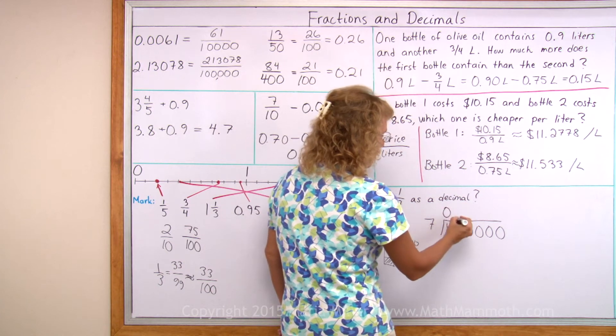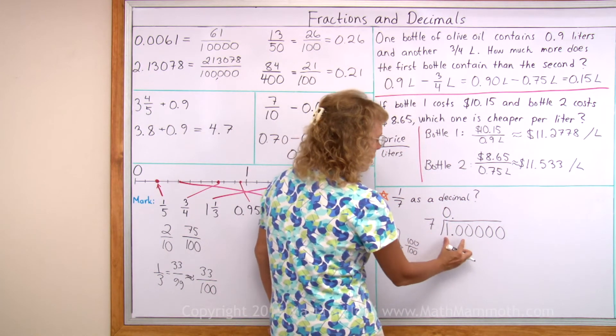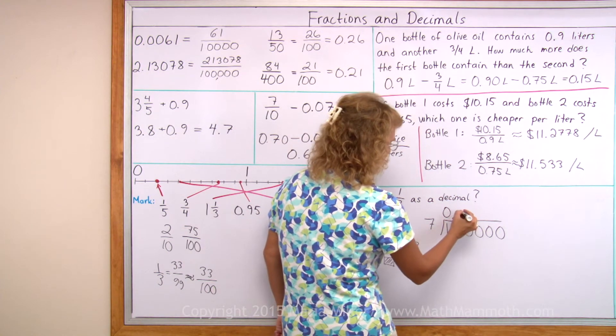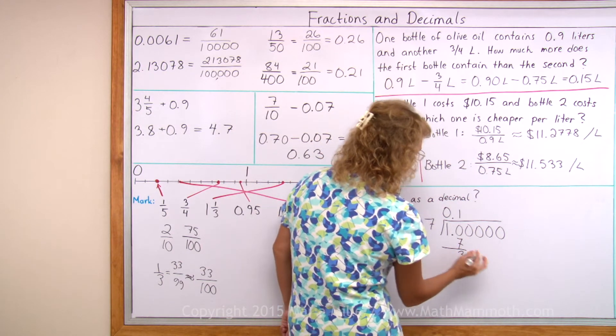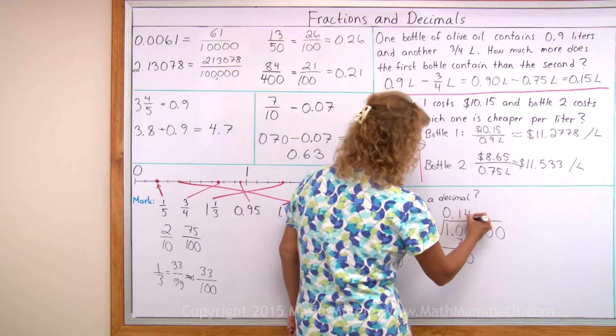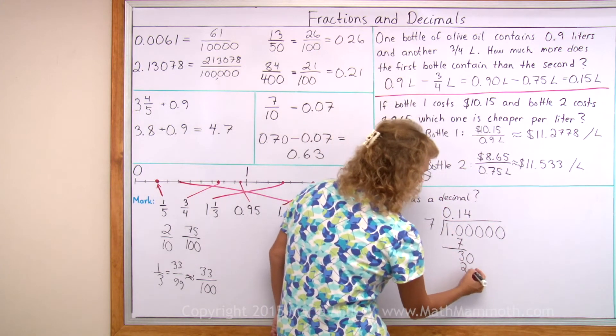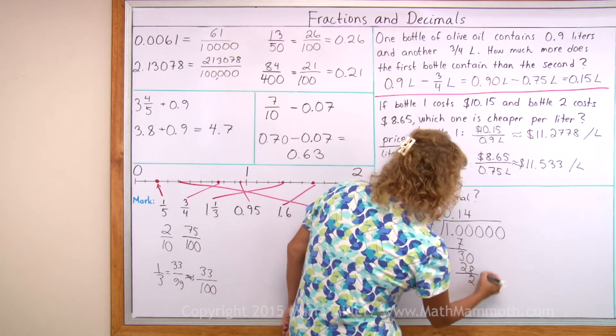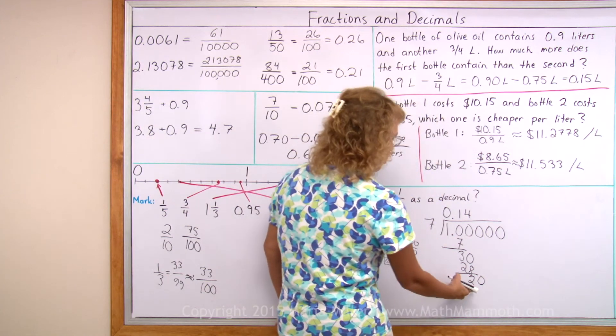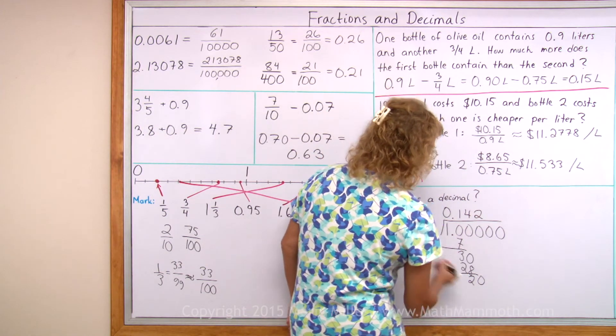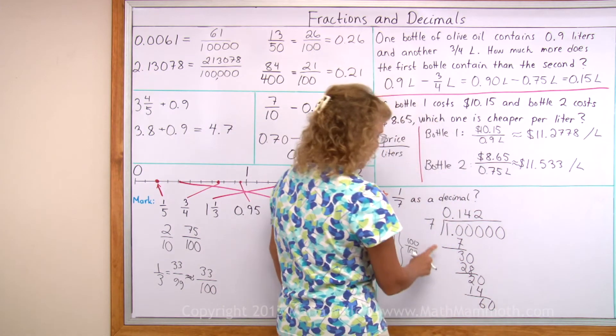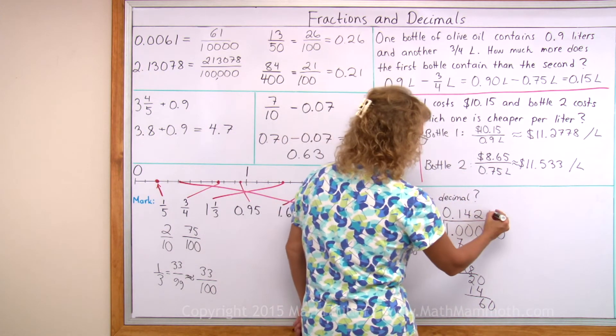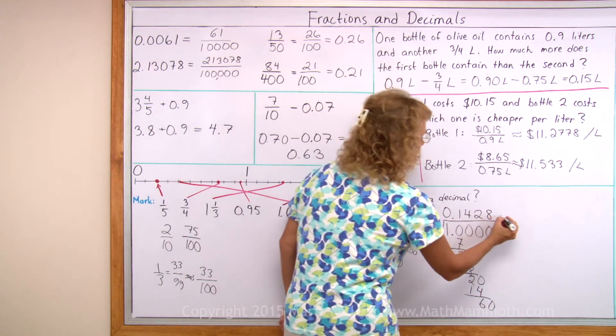Seven goes into one zero times. So I look at seven going into ten here. Just once. One times seven. And then I get thirty. Seven goes into thirty four times. And then we get twenty-eight. Subtract. And twenty. Seven goes into twenty two times. Get fourteen. I'm going to run out of space, but there would be eight next. Then it continues.